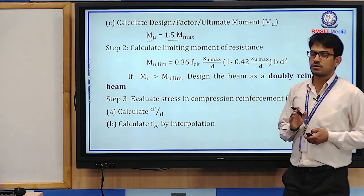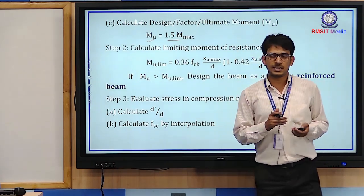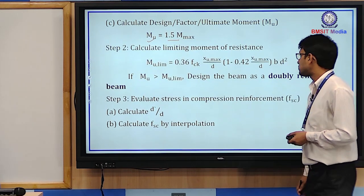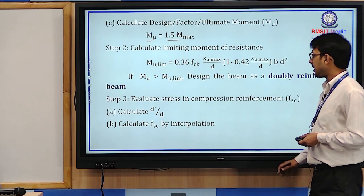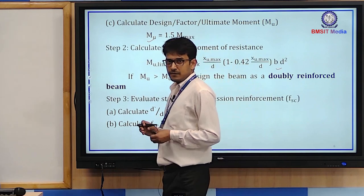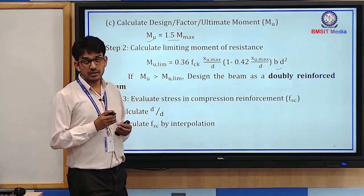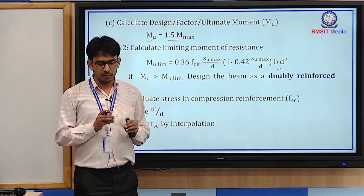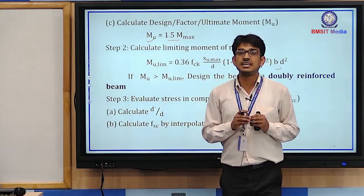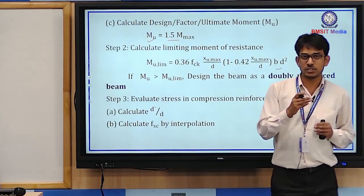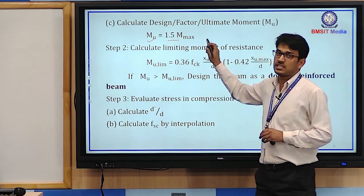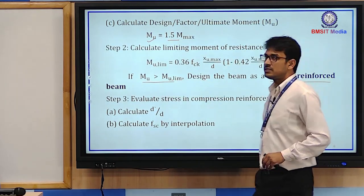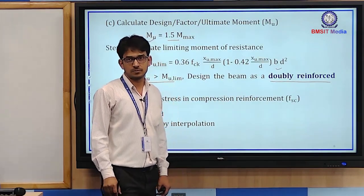Step 2: Calculate the limiting moment of resistance. The formula is: Mu,lim = 0.36 × fck × (xu,max/d) × [1 − 0.42 × (xu,max/d)] × b × d². Now compare Mu from Step 1 with Mu,lim from Step 2. If Mu ≤ Mu,lim, we can design the beam as a singly reinforced beam. We proceed to doubly reinforced beam design only when Mu > Mu,lim.